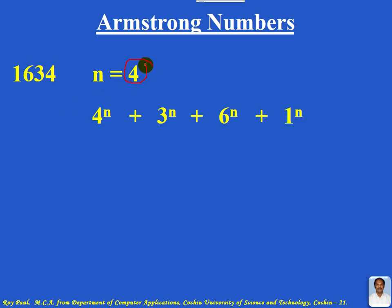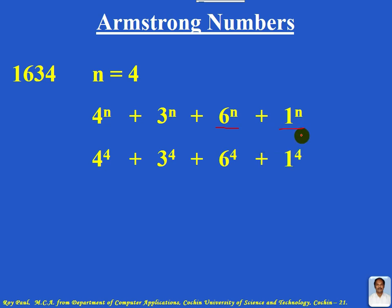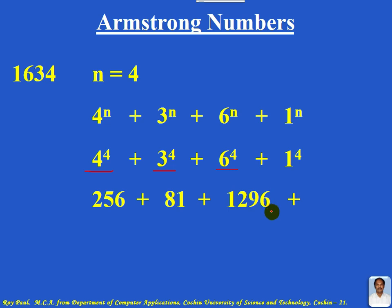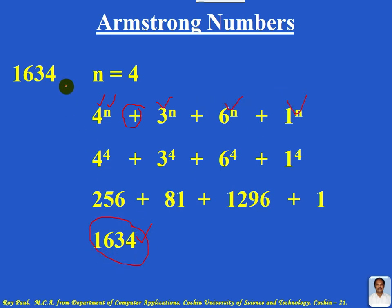Here n is taken as 4. So this is 4 raise to 4, plus 3 raise to 4, plus 6 raise to 4, plus 1 raise to 4. What is 4 raise to 4? It is 256. Plus 3 raise to 4 is 81. Plus 6 raise to 4 is 1,296. Plus 1 raise to 4 is 1. And this sum equals 1,634.